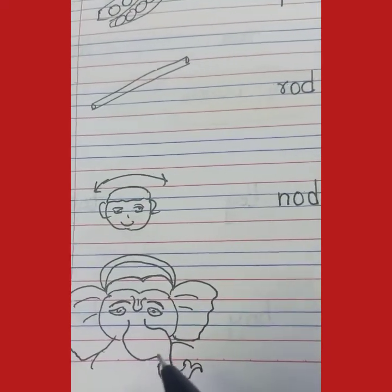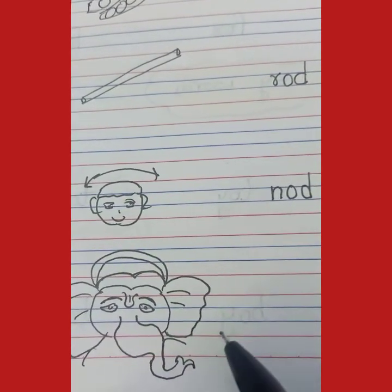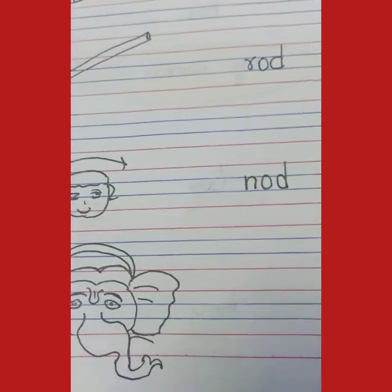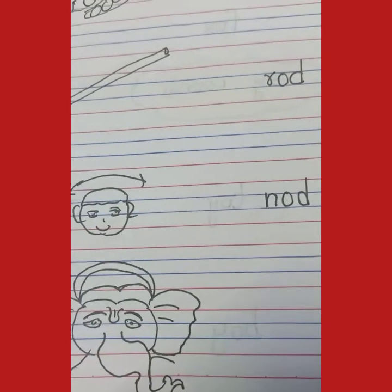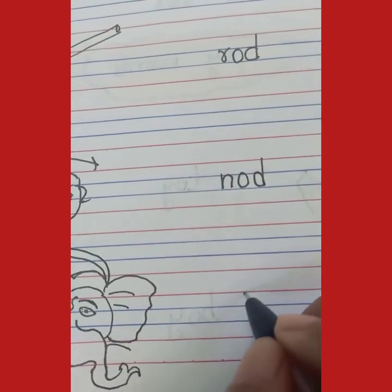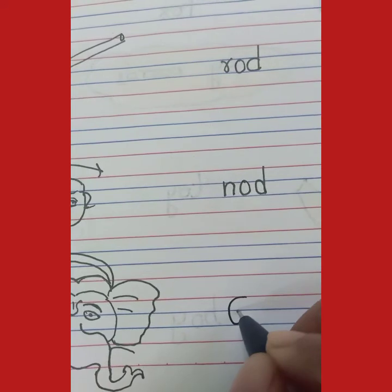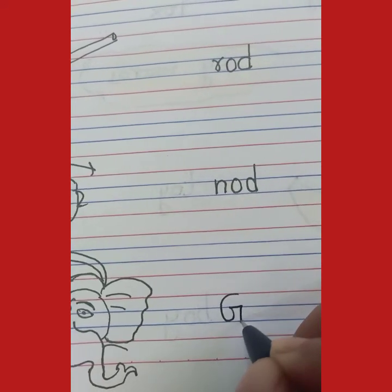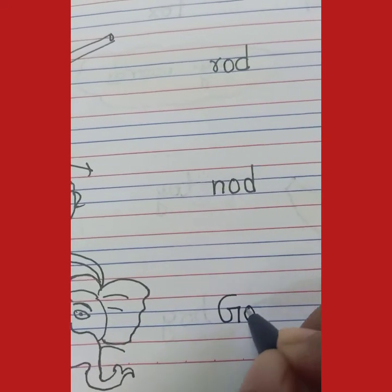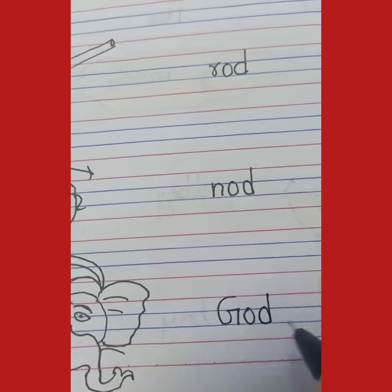Next, this is the picture of God. Ganesh ji hain yeh. God — God. Kaise likhenge? God — G se banta hai God. God.